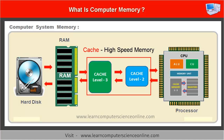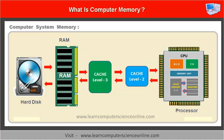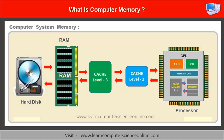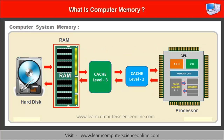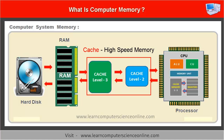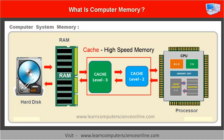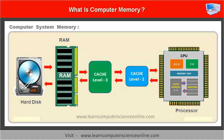The cache memory is a high speed memory placed between the microprocessor CPU and the main system memory RAM. The cache memory is used by the central processing unit to access the frequently used data and the program instructions.